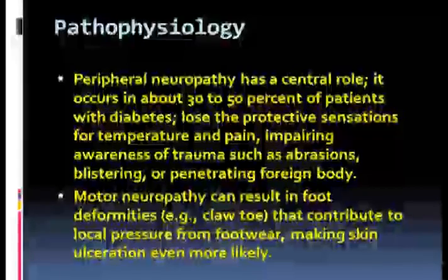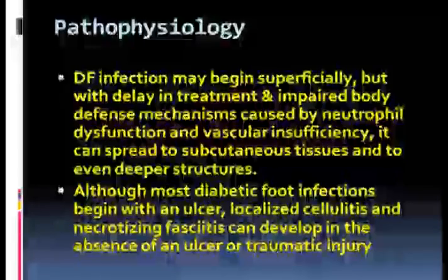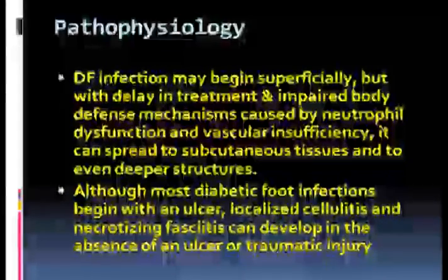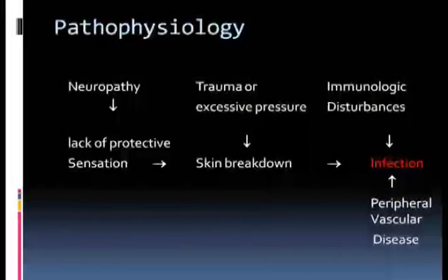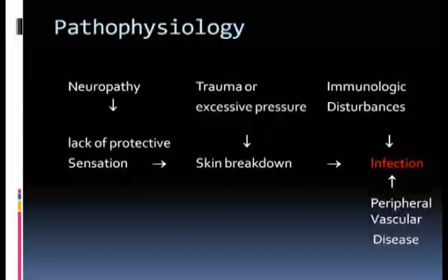Motor neuropathy and how it contributes to diabetic foot infection has been discussed. Diabetic foot infection may begin superficially, but with delay in treatment and impaired body defense mechanisms caused by neutrophil dysfunction and vascular insufficiency, it can spread to subcutaneous tissues and even deeper tissues. Although most diabetic foot infections begin with an ulcer, localized cellulitis and necrotizing fasciitis can develop in the absence of an ulcer or traumatic injury. Neuropathy leads to lack of protective sensation and skin breakdown, which may lead to infection. Trauma or excessive pressure can also lead to skin breakdown, and peripheral vascular disease contributes to development of infection.